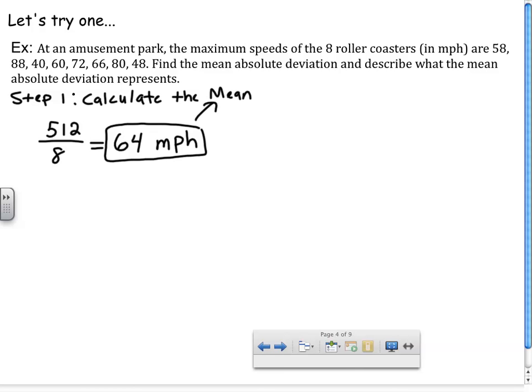That's my mean. Now what I need to do is I need to find how far away are each of these values from that mean of 64. So maybe creating a table would be an easy way to keep yourself organized. Step 2 is to calculate deviations.